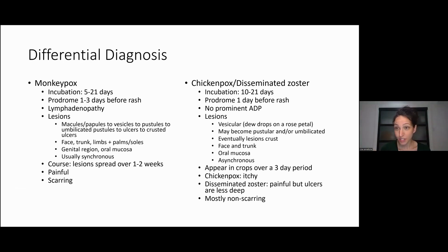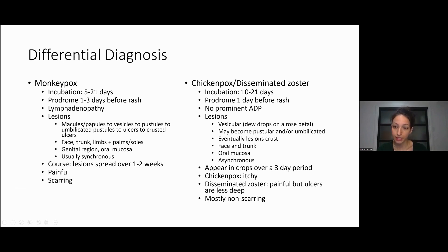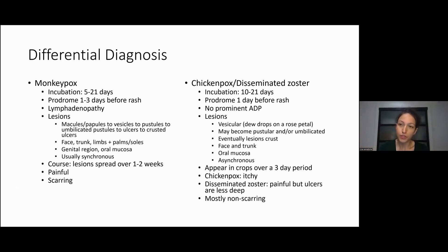You stop having new lesions much faster with varicella zoster than with monkeypox. The easiest way to tell chickenpox apart is that the lesions are not painful — they're very itchy. That's a really important clue. With disseminated zoster, usually seen in immunocompromised patients, the ulcers are painful but less deep — more like thin erosions — and they don't usually leave scars.